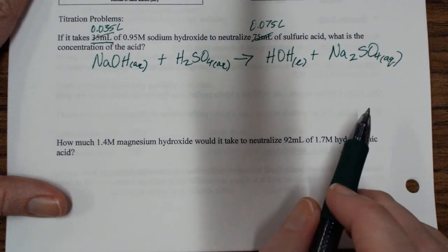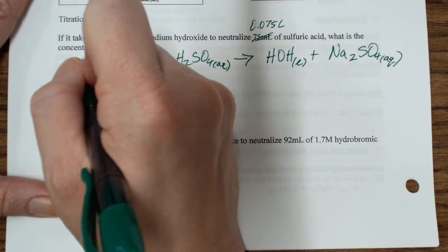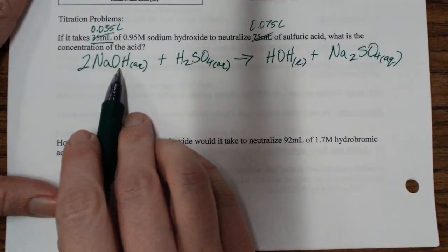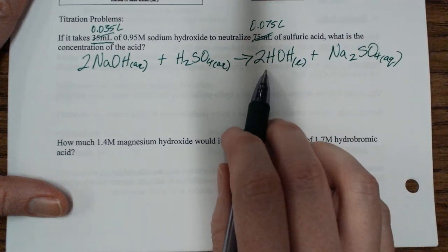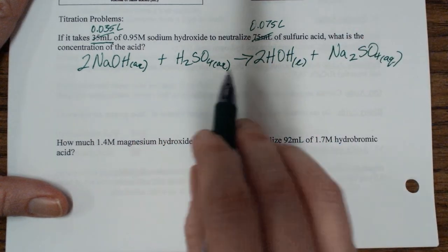Let's balance it. I have 1 sodium, 2 sodium, so I need a 2 here. Now I have 2 hydroxides, 1 hydroxide, so I need a 2 here. 2 hydrogens, 2 hydrogens, 1 sulfate, 1 sulfate. Done.